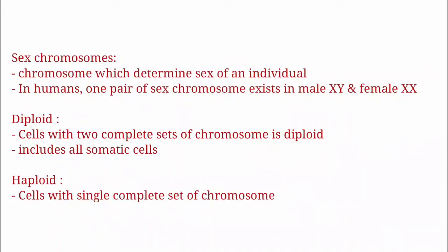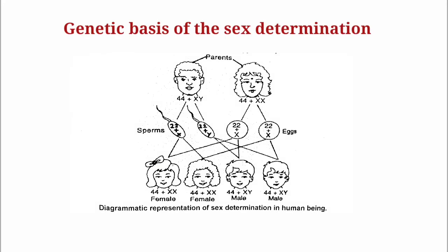Diploid cells have two complete sets of chromosomes and include all somatic cells — the characteristics passed from parents to offspring. Haploid cells have a single complete set of chromosomes. The next concept we need to learn about is the genetic basis of sex determination.